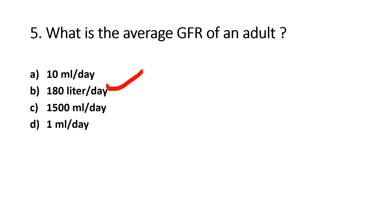The filtrate formed in both kidneys per minute — the Glomerular Filtration Rate — is 125 ml per minute, totalling 180 litres per day.